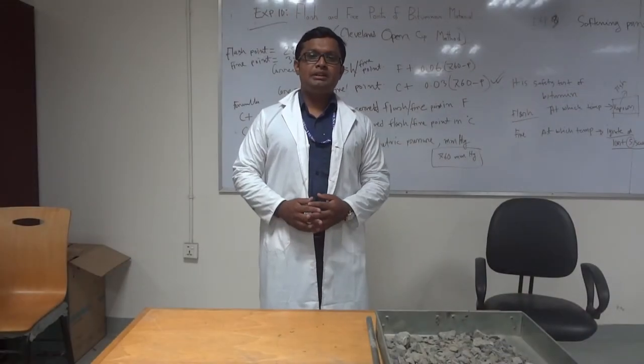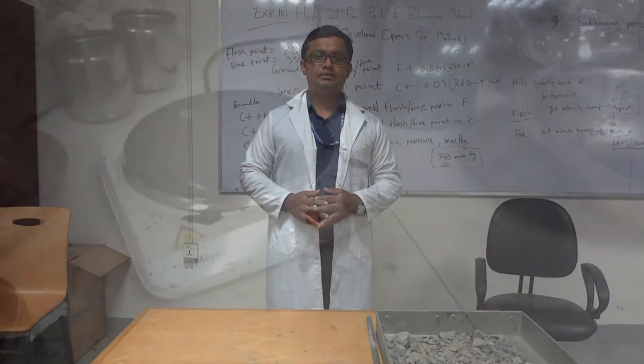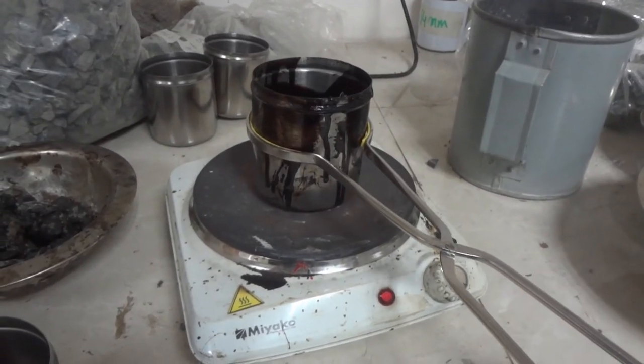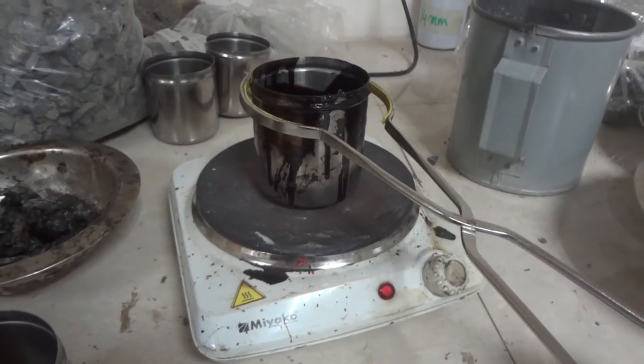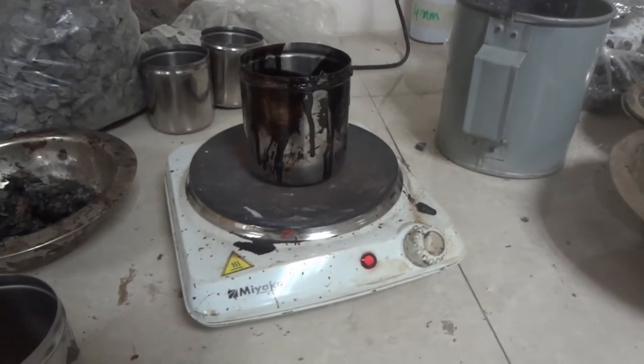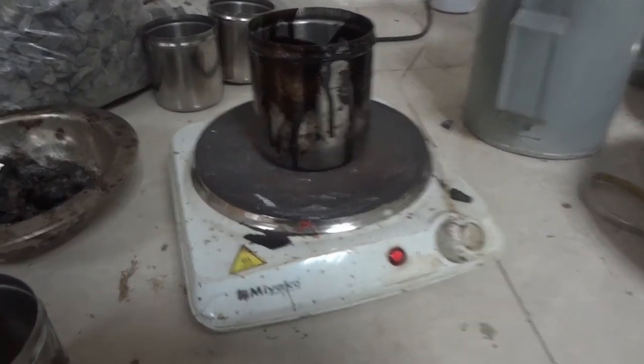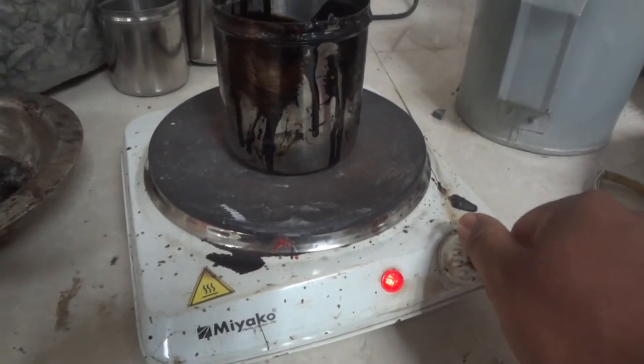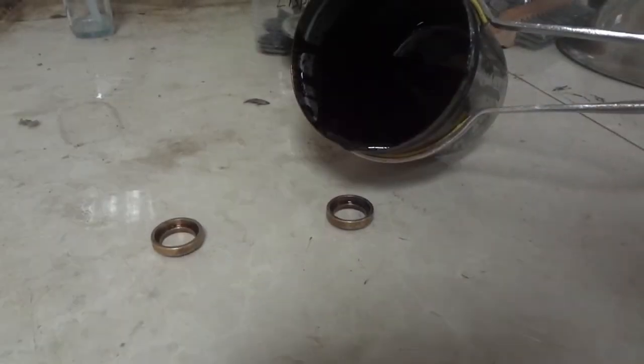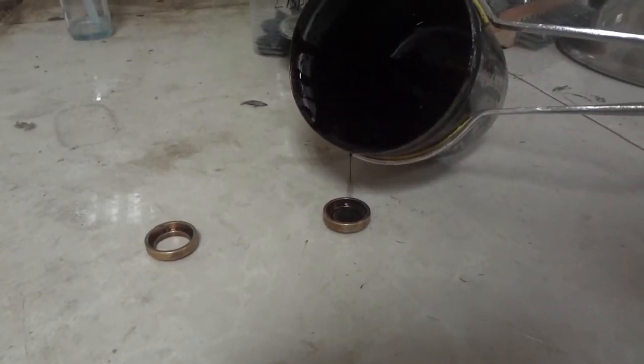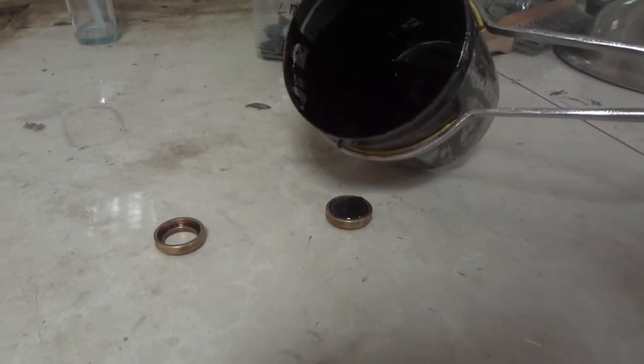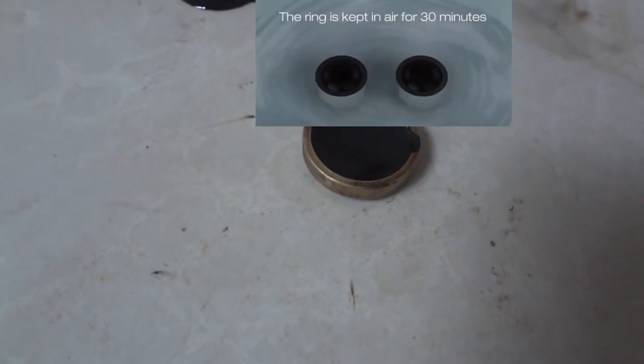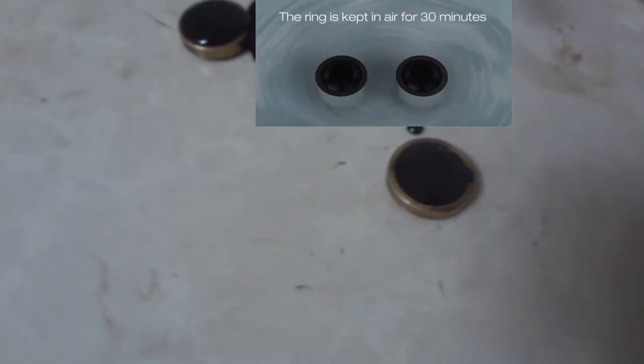Now I will start the experiment. The bitumen is heated to a temperature between 75 degrees Celsius to 100 degrees Celsius until it is completely in liquid form. Now pour the heated bitumen in the ring. The ring is kept in the air for 30 minutes.